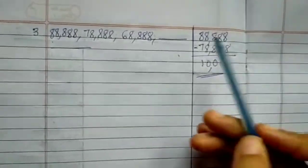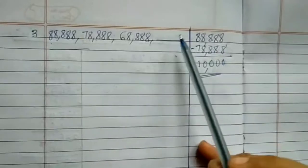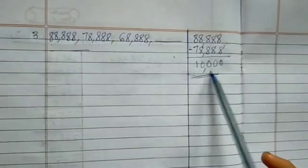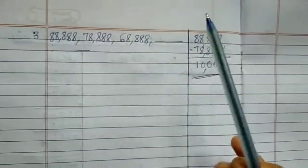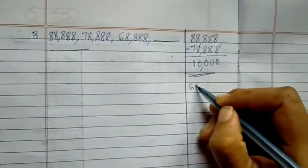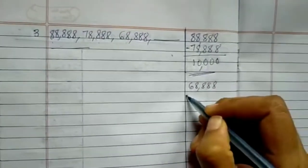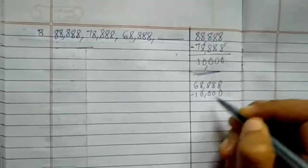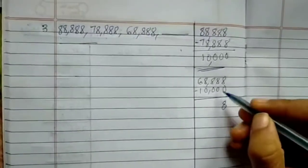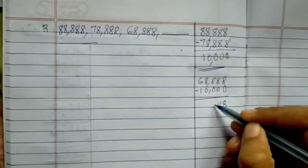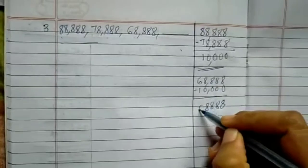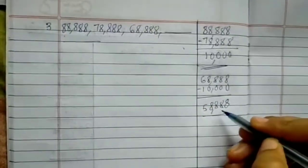So let's find out the answer for the fourth blank. 88,000 becomes 78,000 minus 10,000 is 68,000. Now 68,888 minus 10,000: 8 minus 0 is 8, 8 minus 0 is 8, 8 minus 0 is 8, 8 minus 0 is 8, 6 minus 1 is 5. So the answer is 58,888.